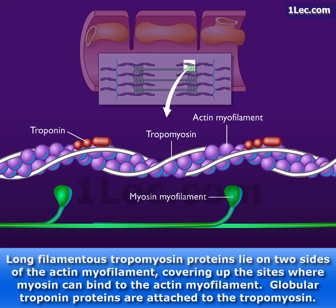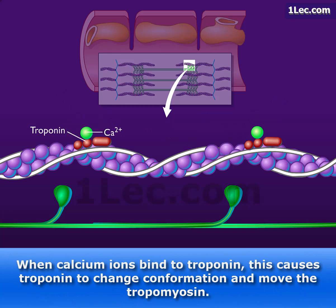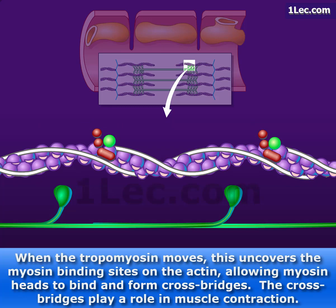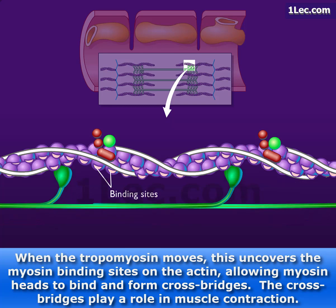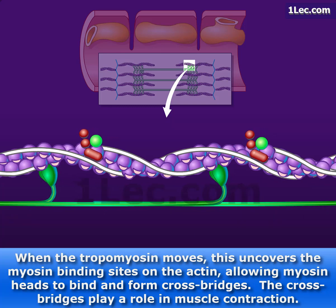Globular troponin proteins are attached to the tropomyosin. When calcium ions bind to troponin, this causes troponin to change conformation and move the tropomyosin. When the tropomyosin moves, this uncovers the myosin-binding sites on the actin, allowing myosin heads to bind and form crossbridges. The crossbridges play a role in muscle contraction.